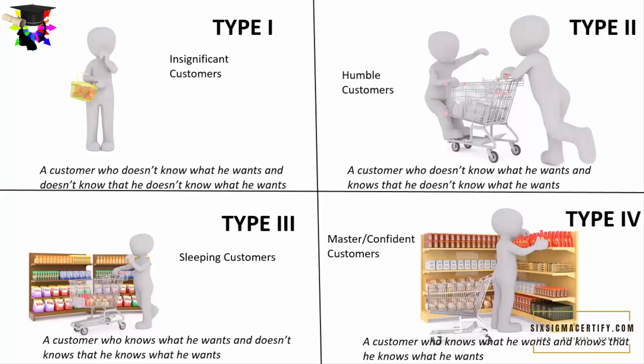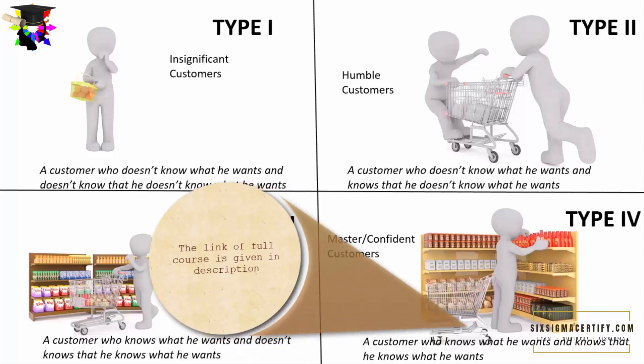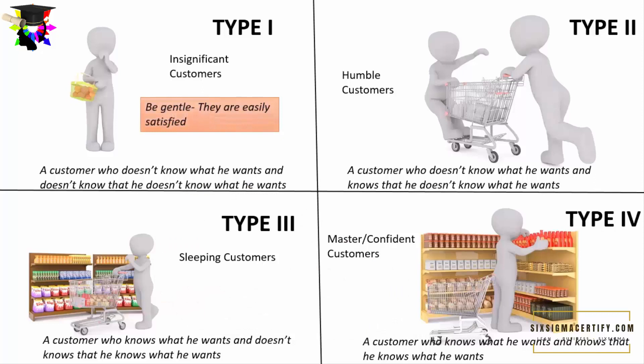Now how to deal with these types of customers and address their different voices? For Type 1 customers, we should be gentle and explain not about the features but about the benefits that those products or services can bring into their life. A lot of times the greatest mistake of a salesperson is explaining different features of the product rather than the benefits. Type 1 or insignificant customers are easily satisfied — we should be gentle and explain the benefits.